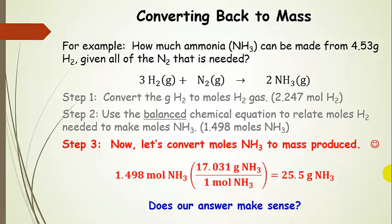The last step is converting our moles of ammonia to mass produced. We have 1.498 moles of ammonia, and one mole of ammonia has a molar mass of 17.031 grams. Doing the math, we end up with 25.5 grams of ammonia. Does our answer make sense? We produced about one and a half moles of ammonia, giving 25.5 grams — that seems like a reasonable answer.